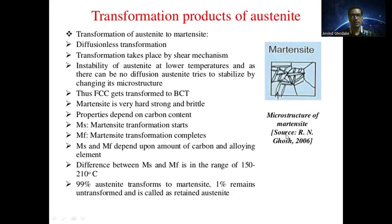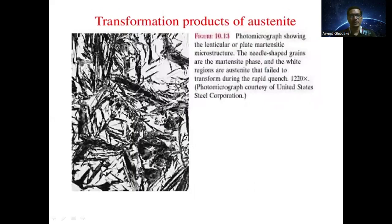Not 100% of austenite gets transformed into martensite — only 99% transforms, and 1% austenite remains untransformed, called retained austenite. This is again an image of the martensite microstructure. The dark needle-shaped portions are the martensitic phase, while the white regions are austenite that failed to transform during rapid quenching, representing retained austenite.